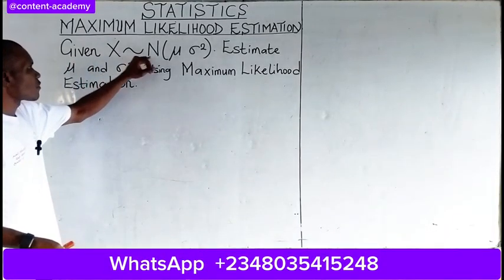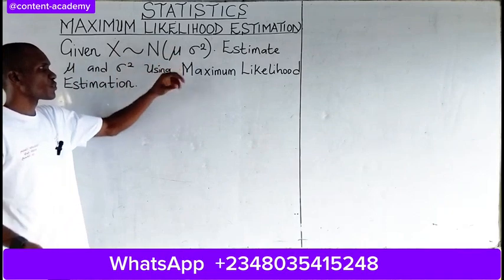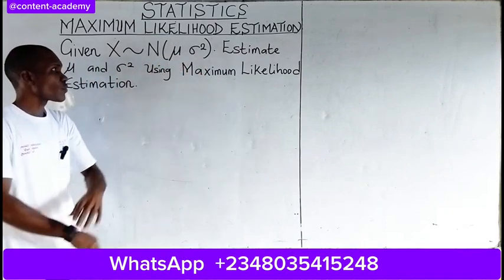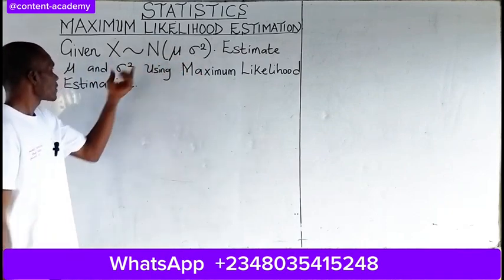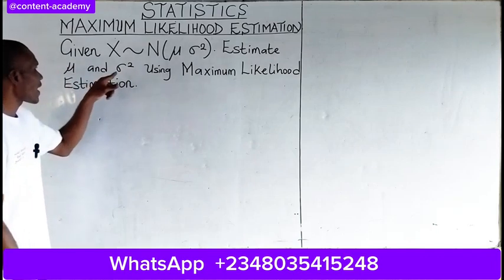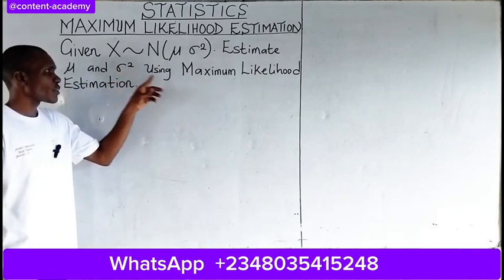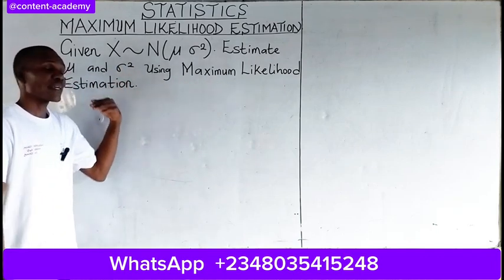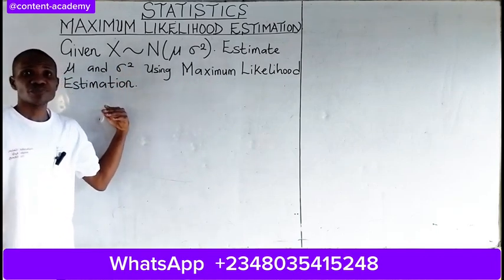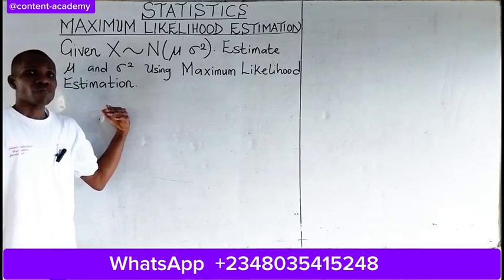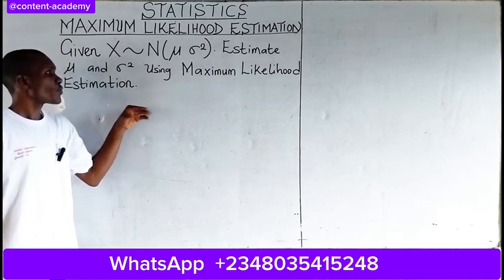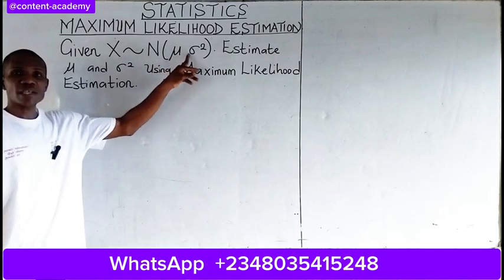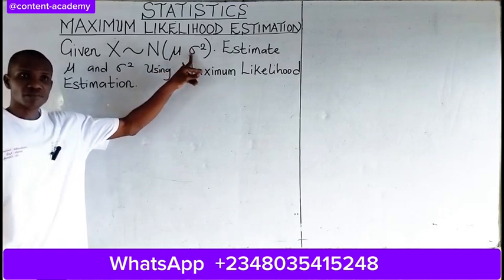X follows a normal distribution with parameters mu and sigma squared. We are asked to estimate mu and sigma squared using maximum likelihood estimation.